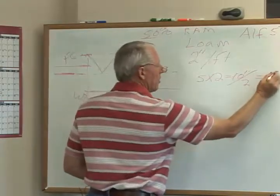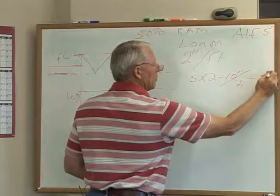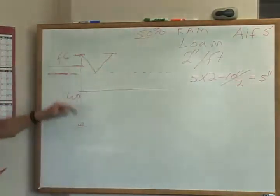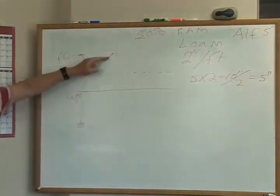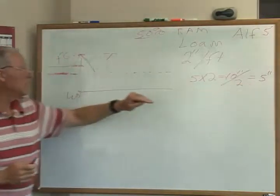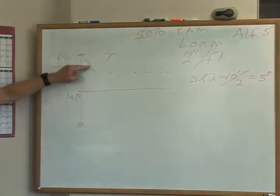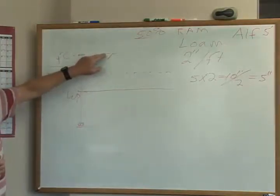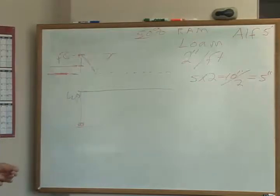So I would only want to use five inches of water and then I'd want to irrigate again, unless my irrigation system can't put on five inches, then I want to use the amount of water that my irrigation can put on and then irrigate again.